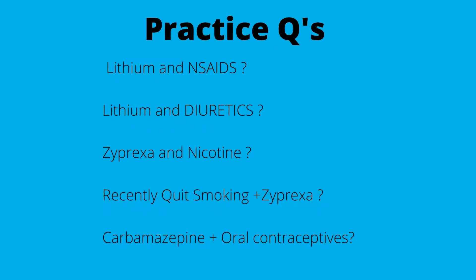If a patient recently quit smoking and is on Zyprexa, you're going to decrease the Zyprexa — because the inducer (nicotine) is gone, so drug levels will rise. Next: a patient on carbamazepine and oral contraceptives. Both are inducers. 3A4 is induced by carbamazepine, which affects oral contraceptive levels as well as carbamazepine (Tegretol) itself. This decreases the birth control pill level, so you would do a medication adjustment — either discontinue or decrease the carbamazepine dose.